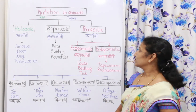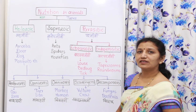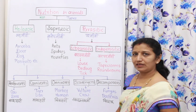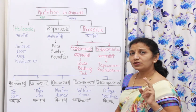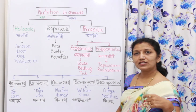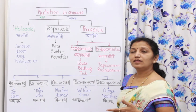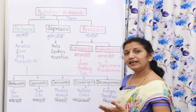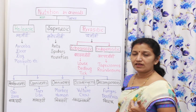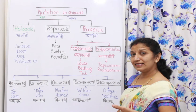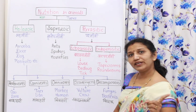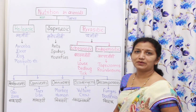Then parasitic nutrition — there are two types. Parasitic means parajivi. In this, two things are important: one is the parasite and one is the host. The parasite causes harm to the host and takes nutrition from the host, but still causes harm to that host.